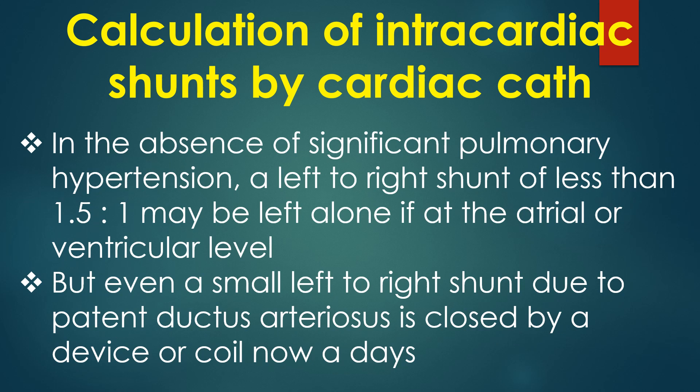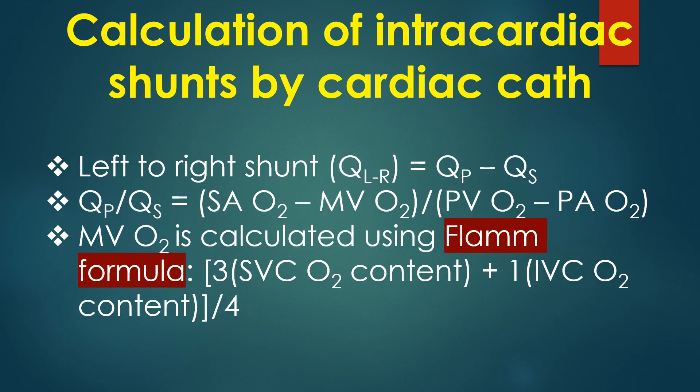But even a small left-to-right shunt due to patent ductus arteriosus is closed by a device or coil nowadays. Left-to-right shunt is equal to QP minus QS. QP/QS equals SiO₂ minus MvO₂ divided by PVO₂ minus PaO₂. MvO₂ is calculated using the FLAM formula: 3 × SVC oxygen content plus 1 × IVC oxygen content, whole divided by 4.